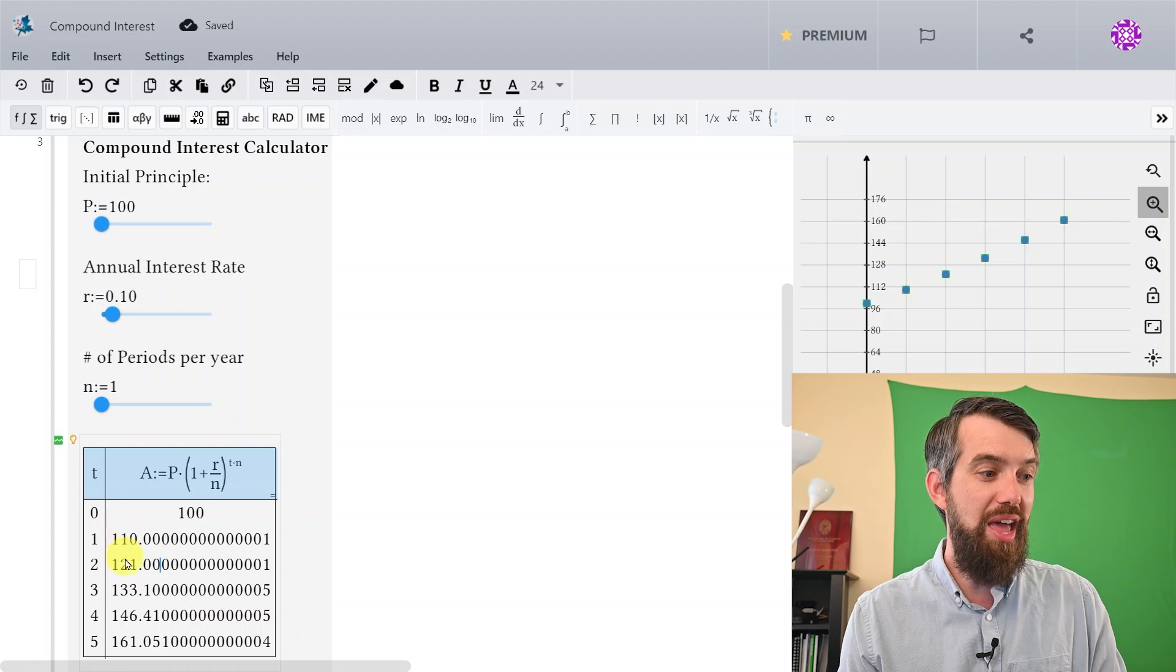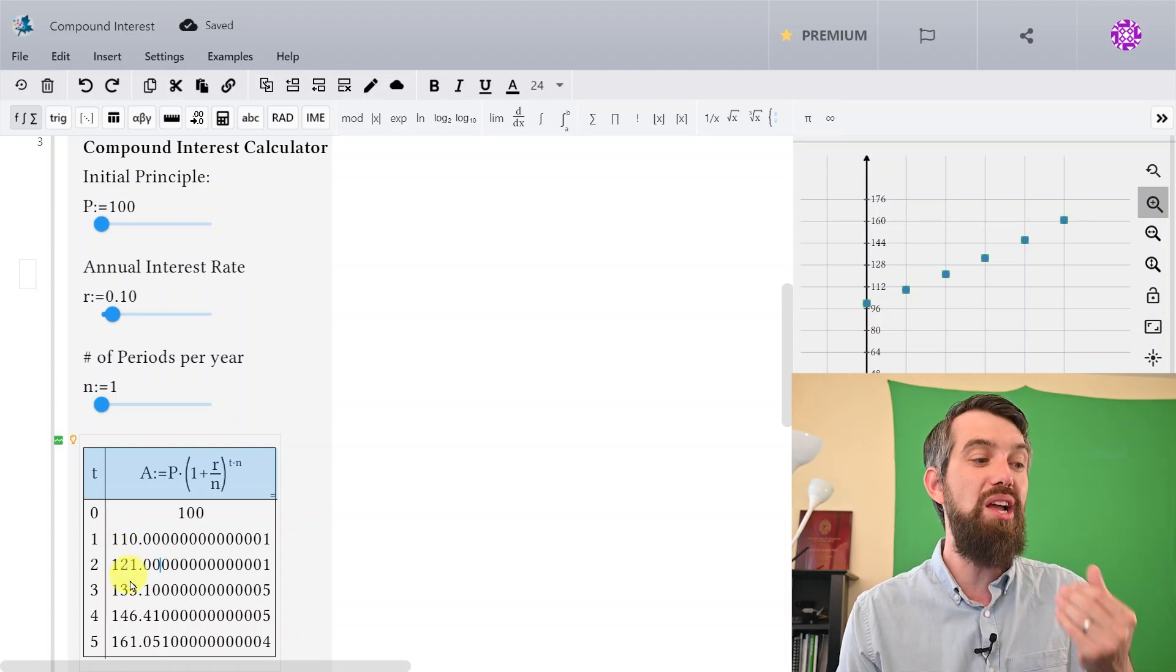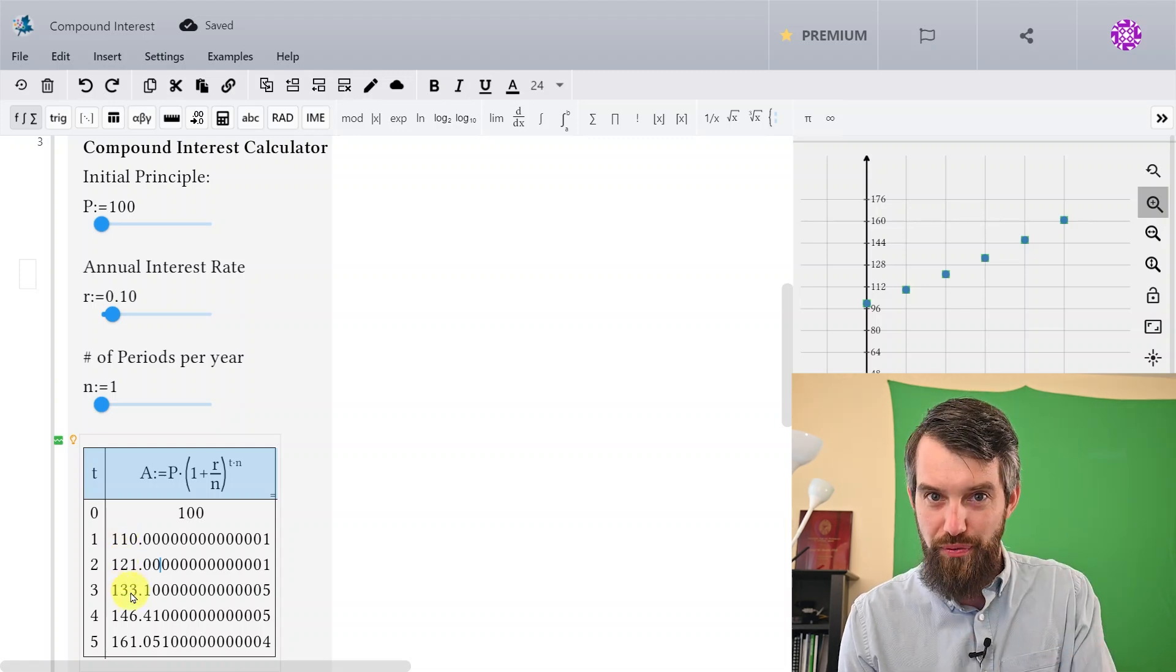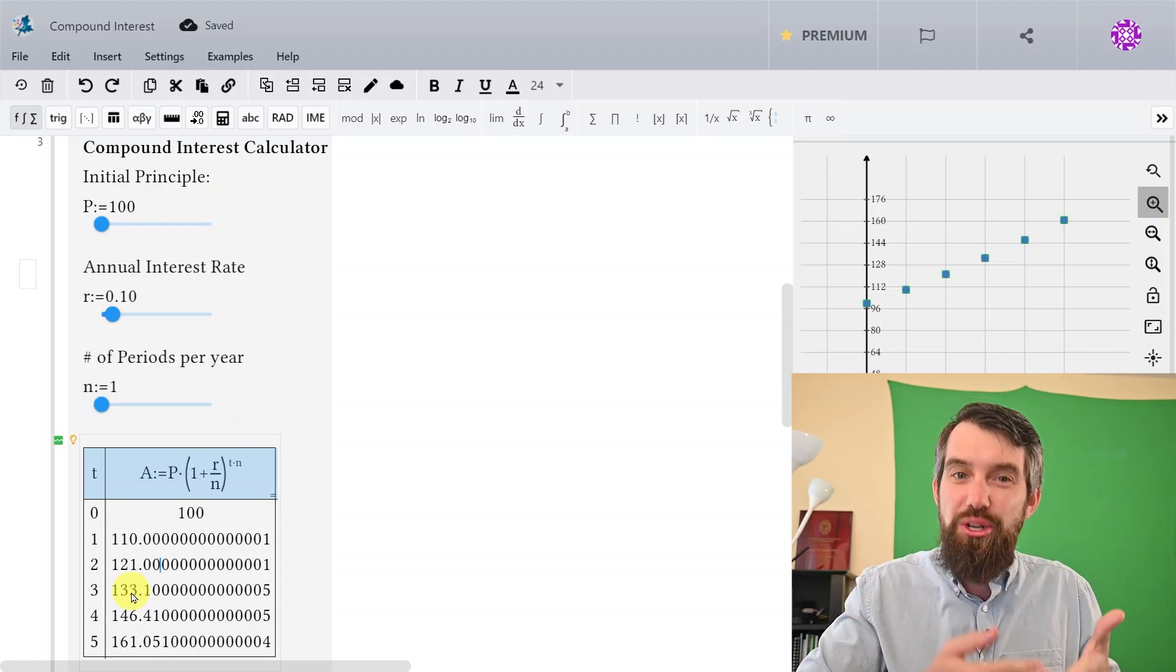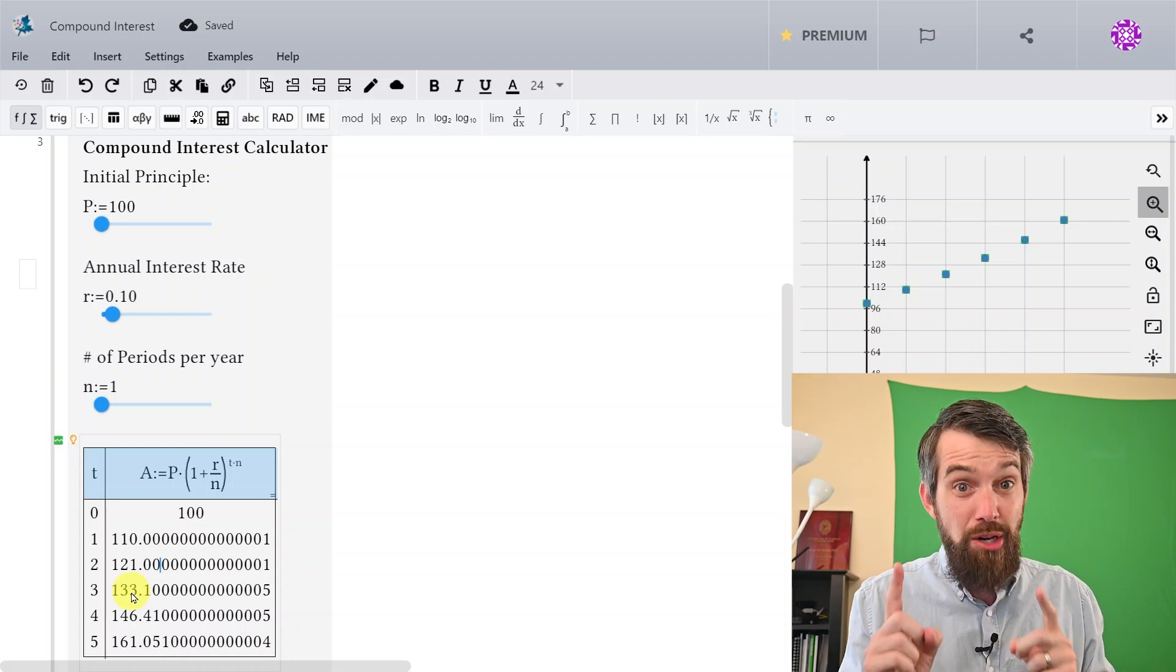But then it goes up 11 dollars, and then it goes up 12 dollars, and so forth. That is, the value of the interest payment is growing every single year because there's interest on the interest. And this could really matter.